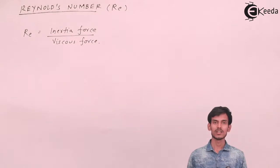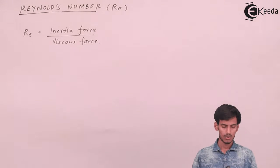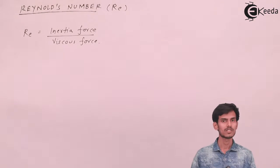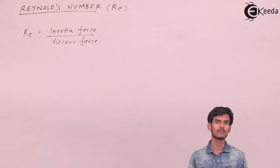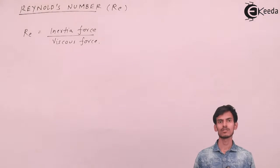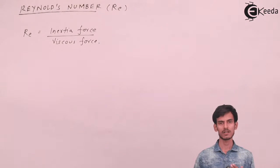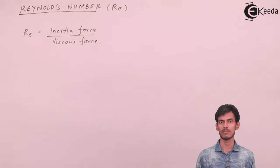As I said earlier, Reynolds number, denoted as Re, is inertia force upon viscous force. Inertia force helps the fluid go in forward direction and viscous force opposes the motion. The relative effect will tell you what is actually happening with the fluid.